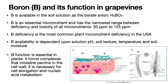The boron availability in the soil is dependent upon the solution pH, the soil texture, the temperature of the soil, and the soil moisture content. Boron is important in plants because it forms complexes in the cell wall that cross-link the pectins in the cell wall, enabling good cell elongation. Boron also contributes to nucleic acid metabolism. We've known that boron is essential for about 100 years, but it's only recently — in the last decade or two — that we discovered any of these functions.